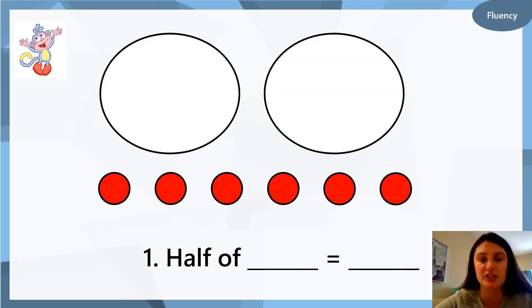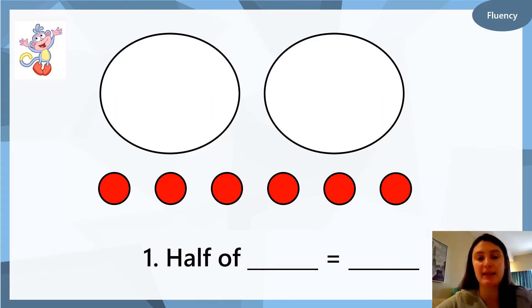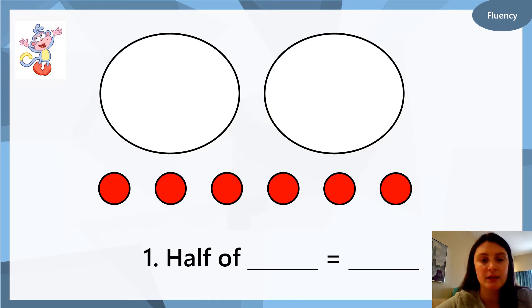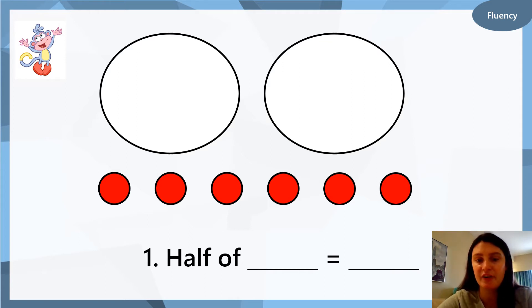Let's have a look at question number one. Half of something equals something. Let's count the red dots to see what number we need to find half of. Should we count them together? Okay, let's go: one, two, three, four, five, six. So we need to find half of six. Very good.